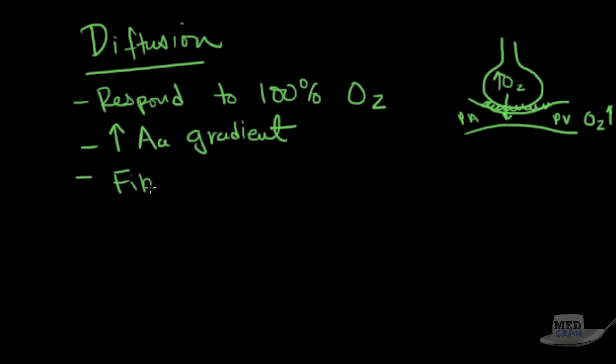It has an increased AA gradient. Where do we see this? Fibrosis. Any kind of situation where there's a collagen deposition here in the interstitium of the lung, like in pulmonary fibrosis, especially if they're exercising.